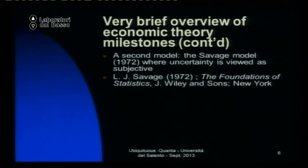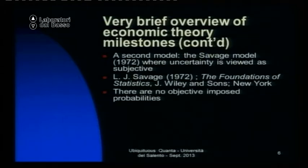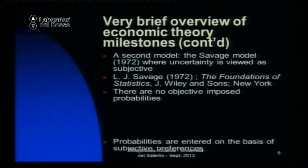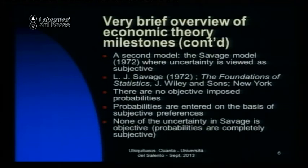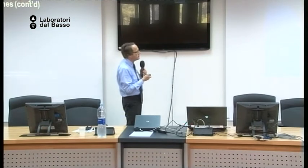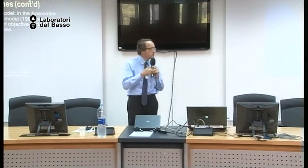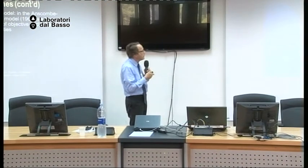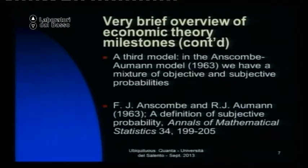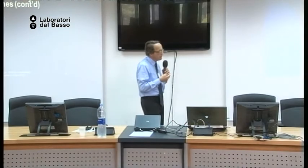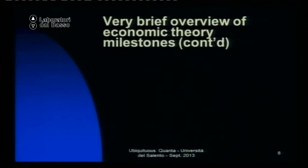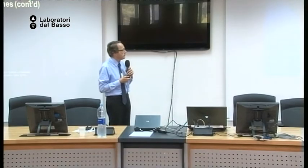That second model is the Savage model from 1972 — he was a very famous statistician who developed an axiomatic structure for expected utility based on subjective probability. Then there is a model which is very often not mentioned: the Anscombe-Aumann model — Aumann being the famous Aumann who won the Nobel Prize — and that's a mixture of subjective and objective probability. Any graduate student in economics will know about those models and will be able to appreciate the subtleties and the axiomatic underpinnings of each of those three models.